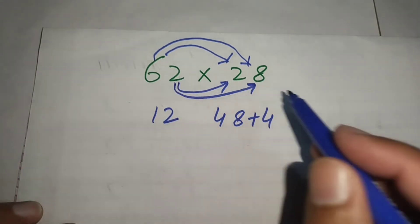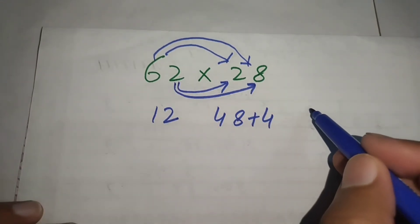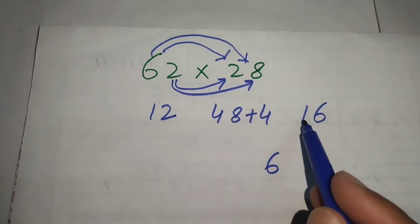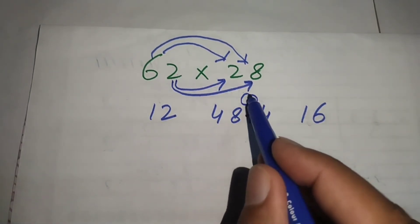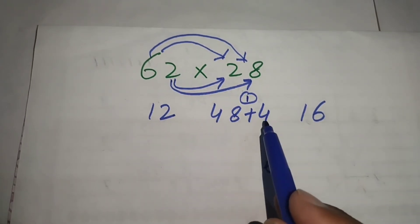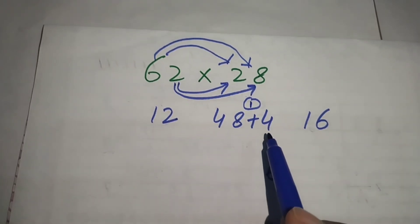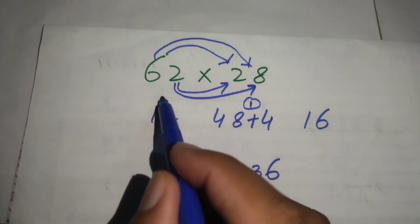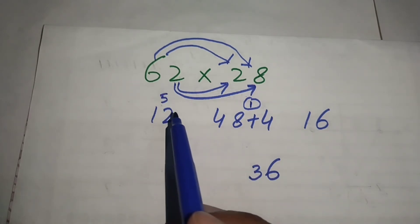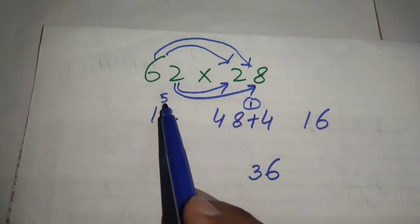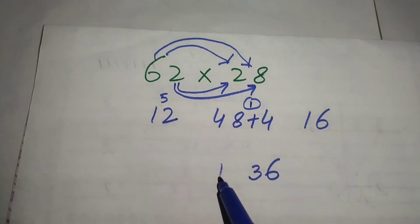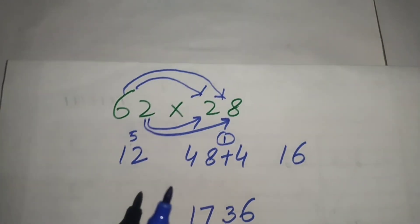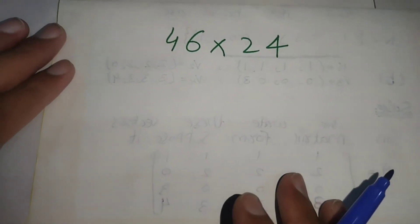We multiply 2 by 8 and get 16. We write 6 as it is and carry 1. We add all numbers: 48 plus 4 is 52, plus 1 is 53 — we write 3 and carry 5. Then 12 plus 5 is 17, and this is our answer.